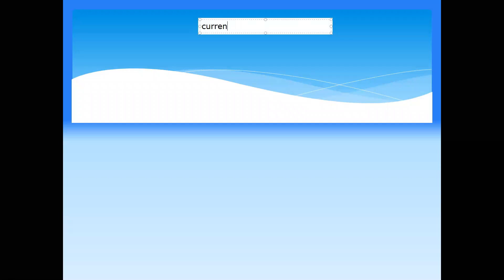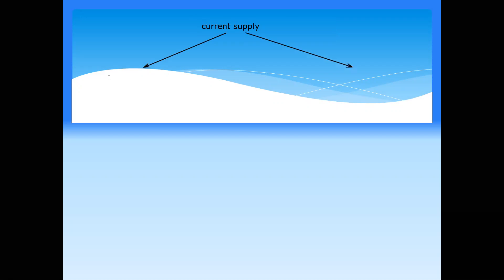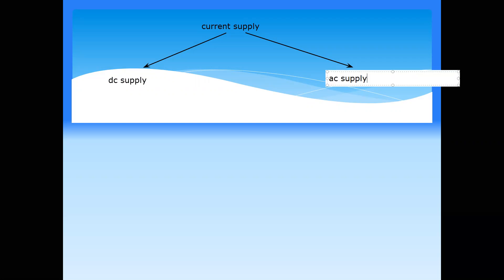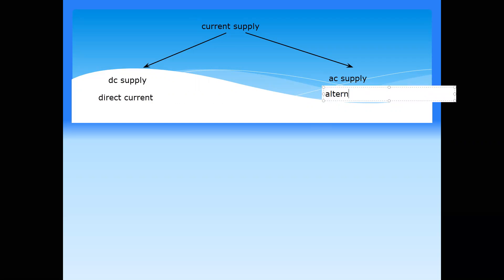Current supplies can be DC or AC. DC stands for direct current, and AC stands for alternating current. Both are types of current supply, but what is the difference between the two?